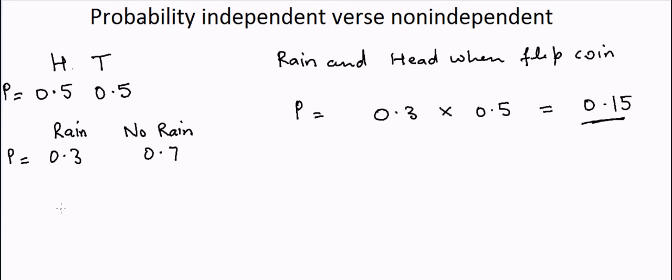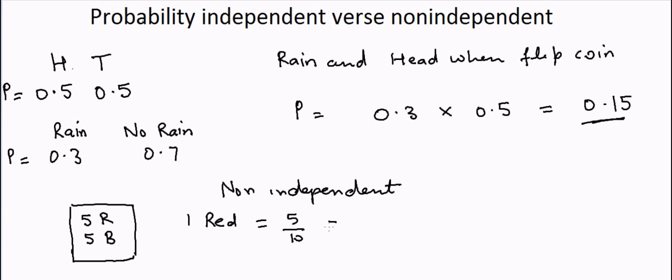Suppose I have a bag with five red balls and five black balls. The probability of getting one red ball is equal to 5 by 10, or is equal to 1 by 2.